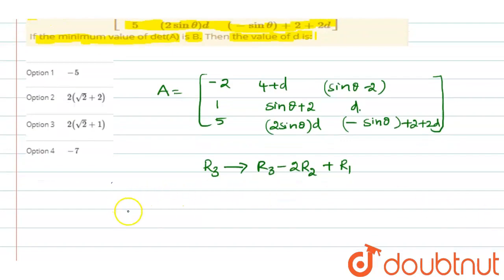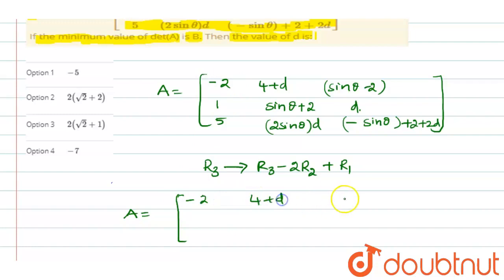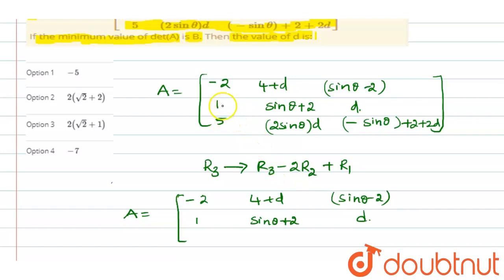After applying the operation, there is no change in the first row and second row: minus 2, 4 plus D, sine θ minus 2; and 1, sine θ plus 2, sine θ plus 2D. For R3, the first element is 5 minus 2 minus 2, which equals 1.